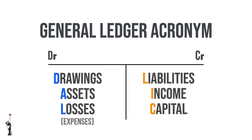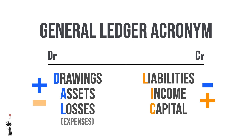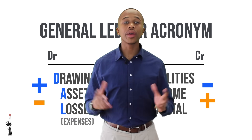DAL represents the accounts that increase on the debit side and decrease on the credit side. LIC represents the accounts that increase on the credit side and decrease on the debit side.